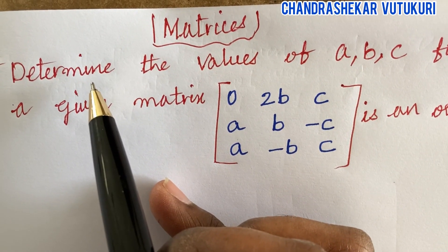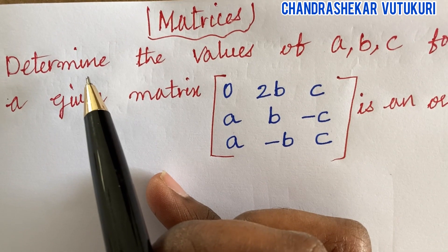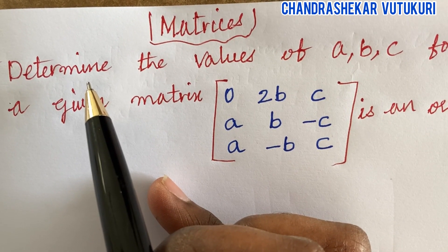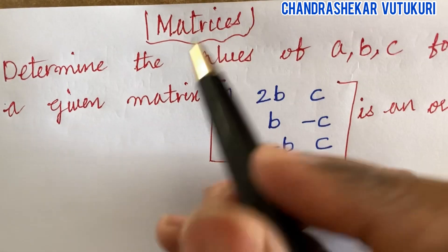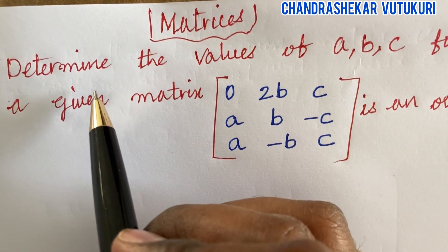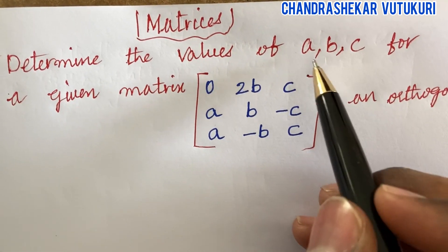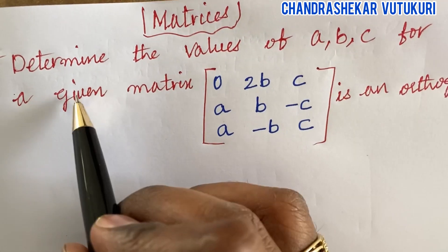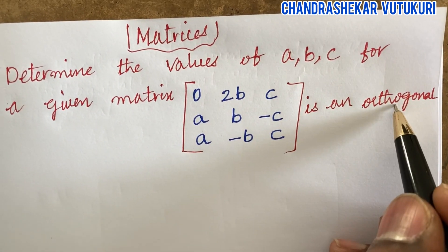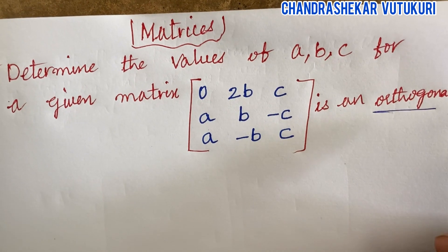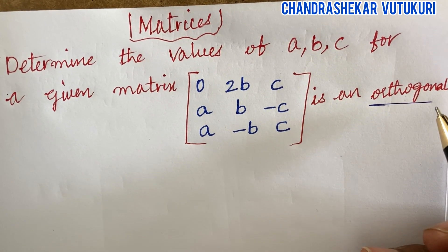Welcome back students. In this video I'm going to cover one more question related to the course matrices and characters for R22 regulation and M1 for the R18 regulation, which is one of the short questions in Part A. They'll be asking such type of questions in your external examination: determine the values of a, b, c for a given matrix that is said to be an orthogonal matrix. In an earlier video I covered one problem related to orthogonal matrix — if you haven't gone through it, please watch it.